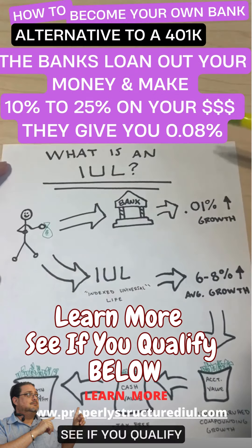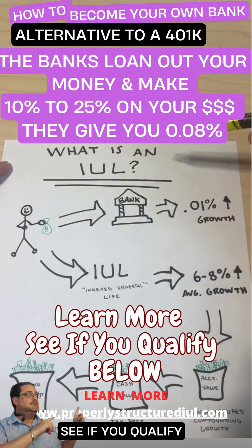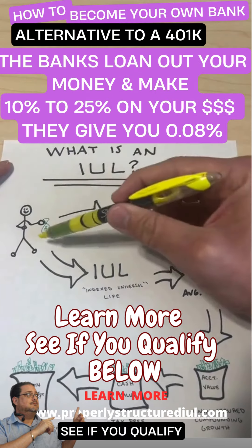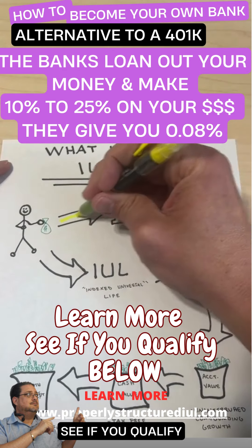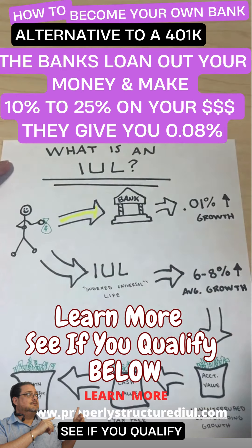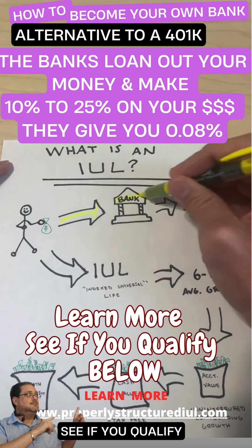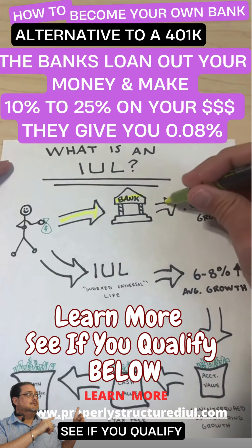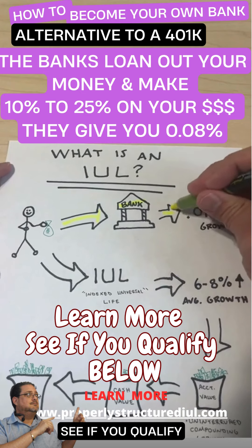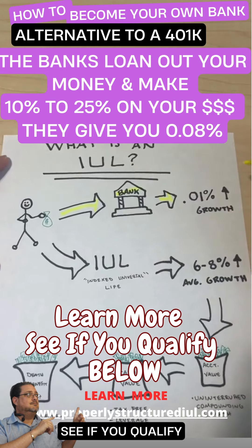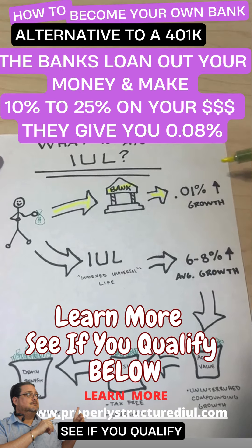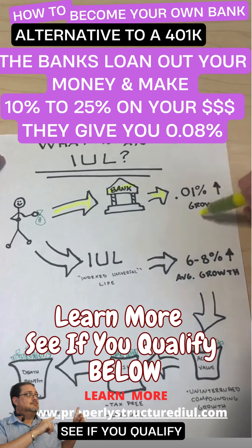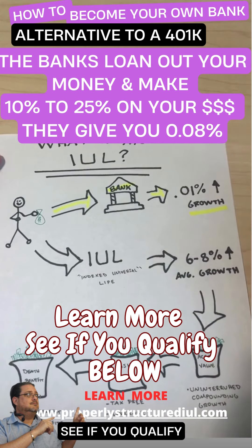This is you over here, sitting with your bag of money. Typically what you're going to do is run over and put it in the bank. And what is the bank going to do? Absolutely nothing — they're going to give you 0.01 or 0.0001 on your money, so you're going to earn basically nothing.